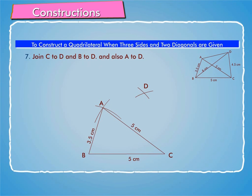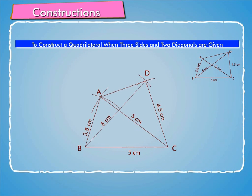Step 7: Join C to D and B to D, and also A to D. Then ABCD is the required quadrilateral.